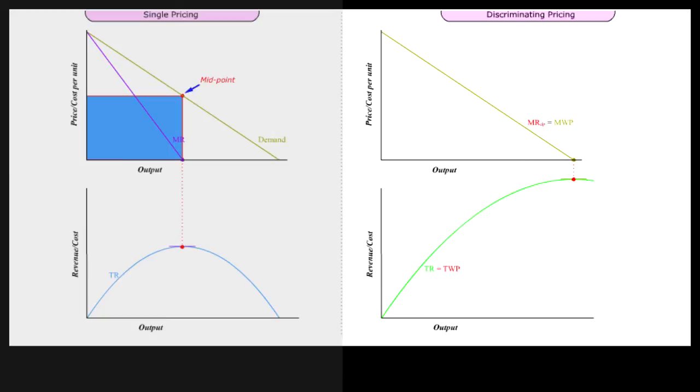TWP reaches its maximum when MRDP is zero. This happens at the end of the demand curve, MWP.